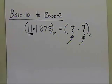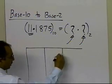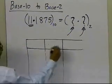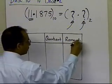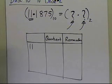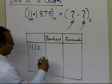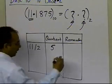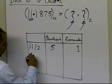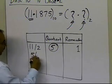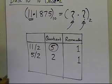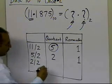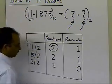Let's find the equivalent of 11. I'm going to draw a table with a quotient column and a remainder column. I take the number 11 and divide it by 2 — the reason I'm dividing by 2 is because that's the base. The quotient is 5, and the remainder is 1. I then take the quotient 5, divide it by 2, and I get quotient 2 and remainder 1. Taking 2 and dividing by 2 again, the quotient is 1 and the remainder is 0.